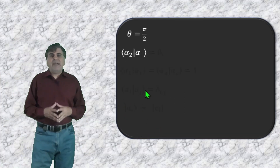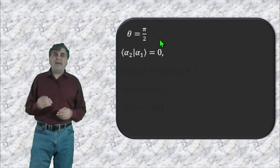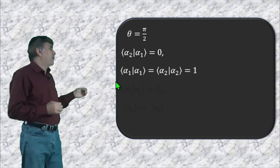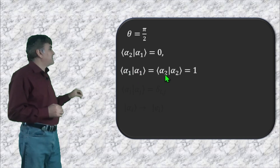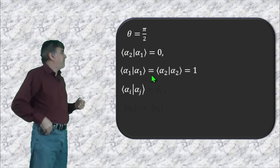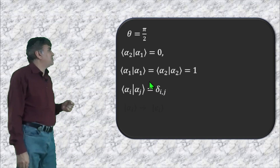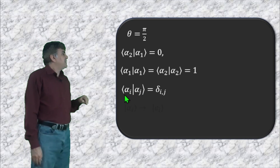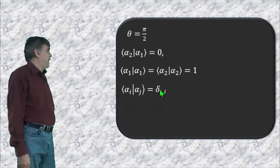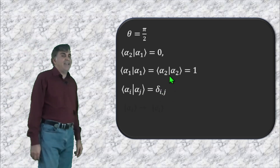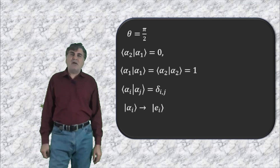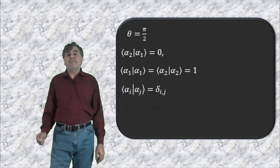It can easily be seen from this equation that when theta equals pi/2 the inner product goes to zero. Under this condition the two kets are said to be orthogonal. Additionally, if the two kets satisfy the condition that the inner product of each with itself equals one — that is, the inner product of alpha_1 with itself equals one and the inner product of alpha_2 with itself equals one — these vectors are then said to be normalized. These two conditions together are written using the Kronecker delta: the inner product of bra alpha_i with ket alpha_j equals delta_ij, which describes the orthonormality condition.